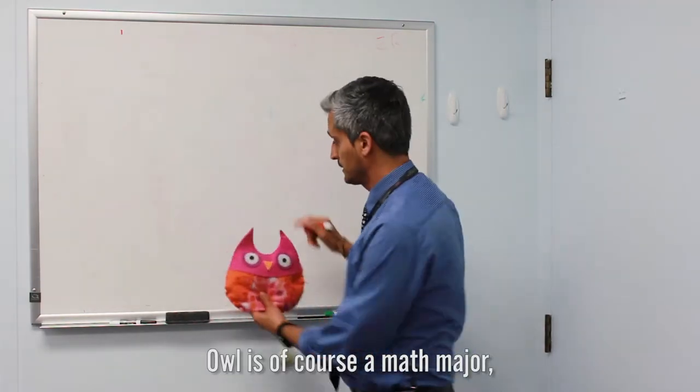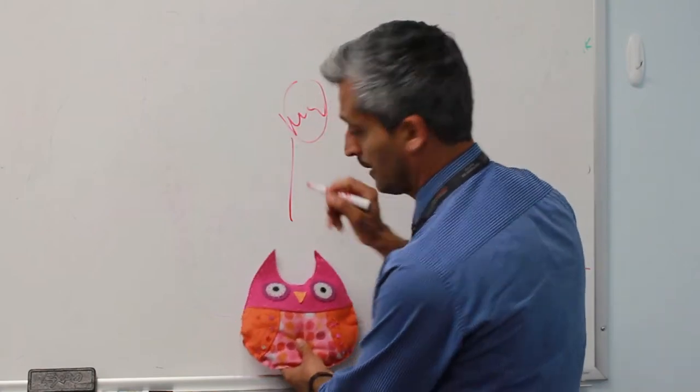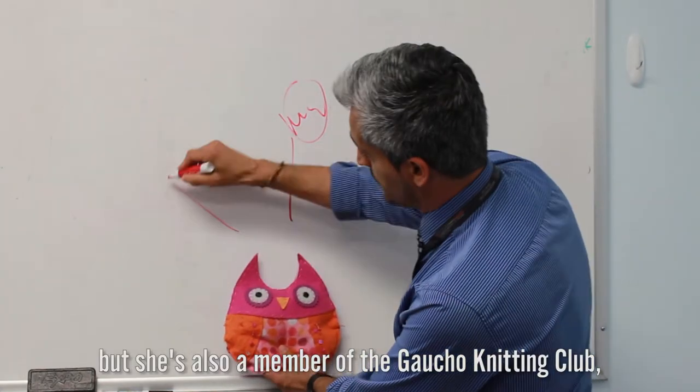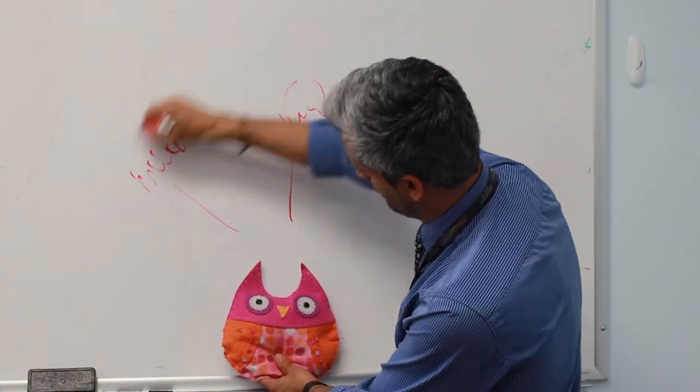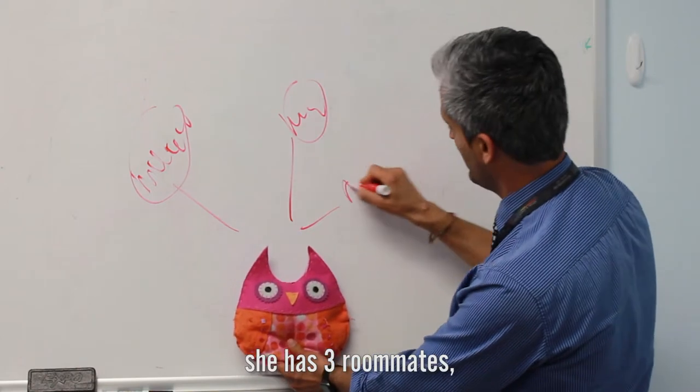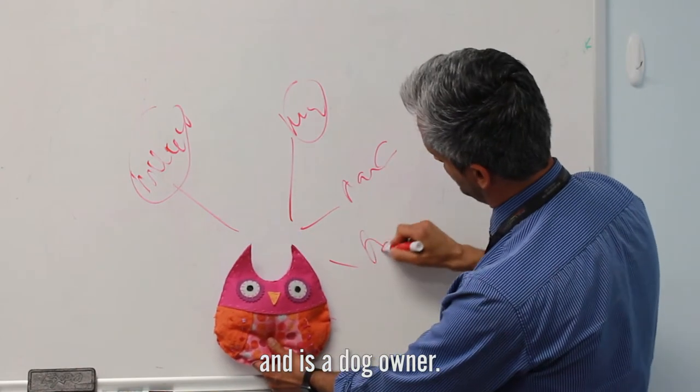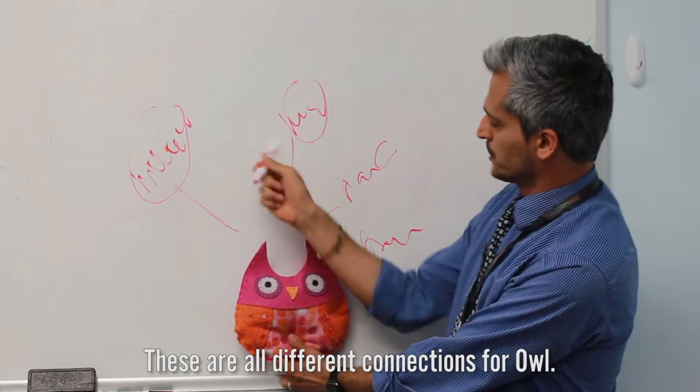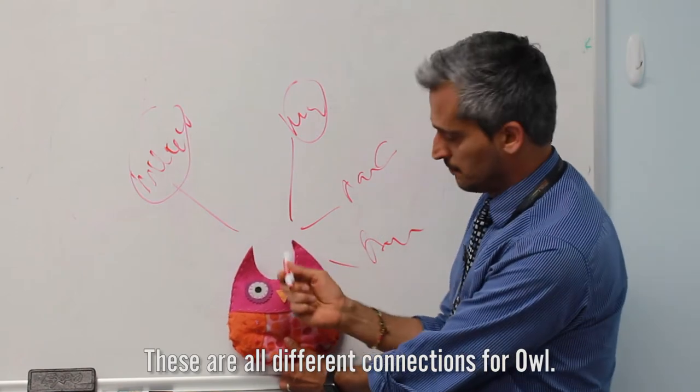Owl is, of course, a math major, but she's also a member of the Gyachou Knitting Club. She has three roommates and is a dog owner. These are all different connections for owl.